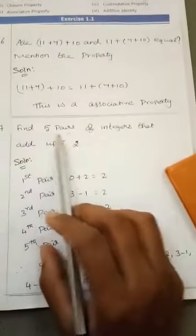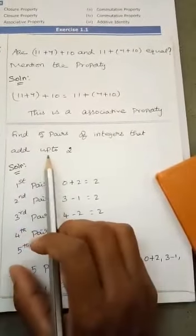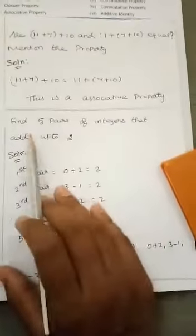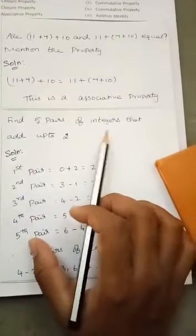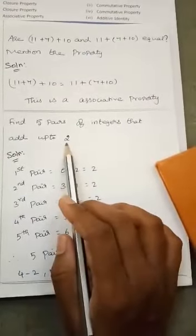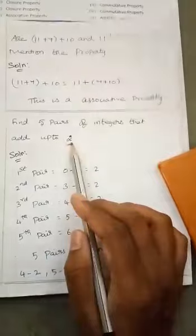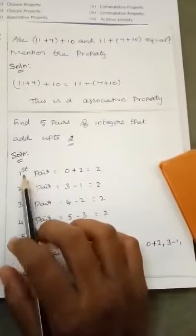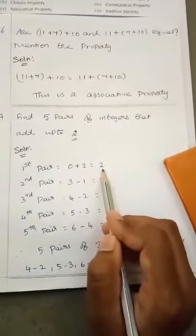Next, seventh sum. Find 5 pairs of integers that add up to 2. We are going to find the 5 pairs of integers that the given number is 2. We want to get a number 2. So, first we are going to create a first pair. 0 plus 2 is equal to 2.